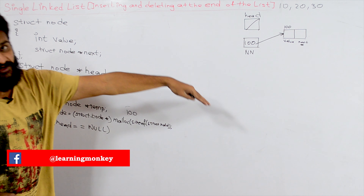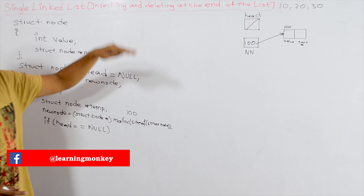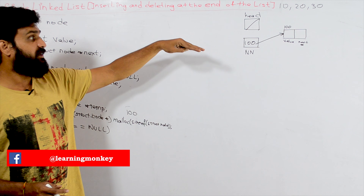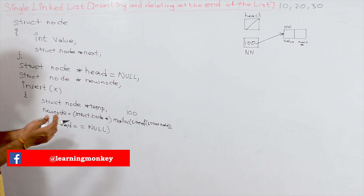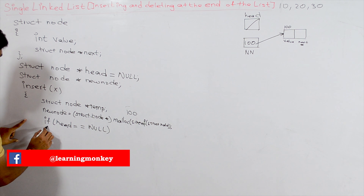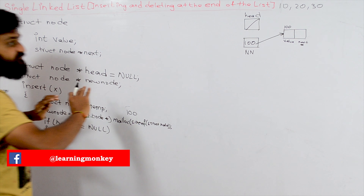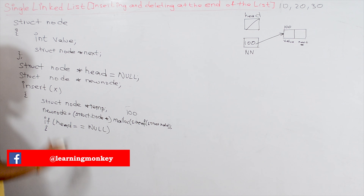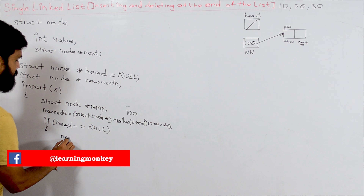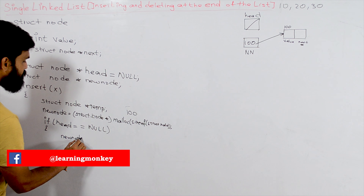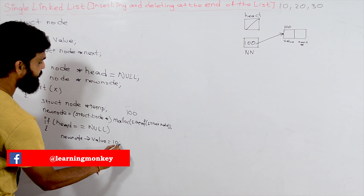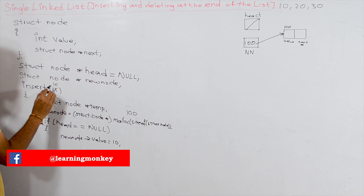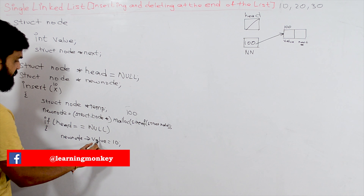The new node's address 100 is converted to type 'struct node*' and assigned to new_node, so new_node now points to address 100. Our next step is to check the insertion condition.